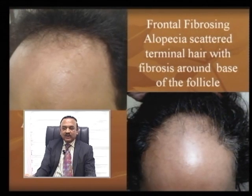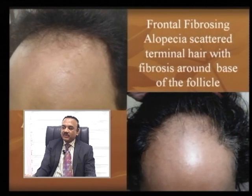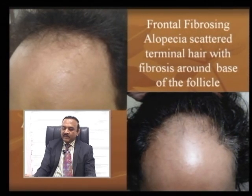This is frontal fibrosing alopecia in the left hand side corner picture, and the upper picture is advanced male pattern hair loss.